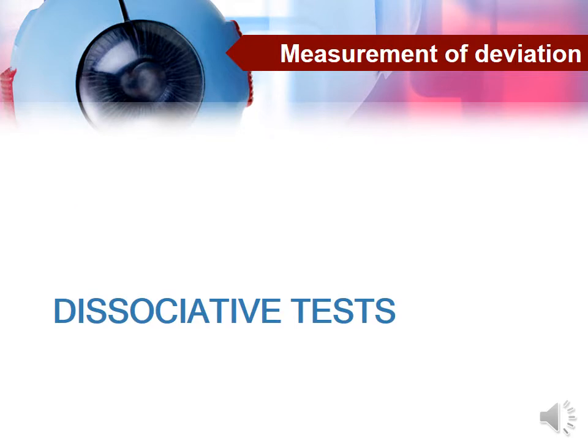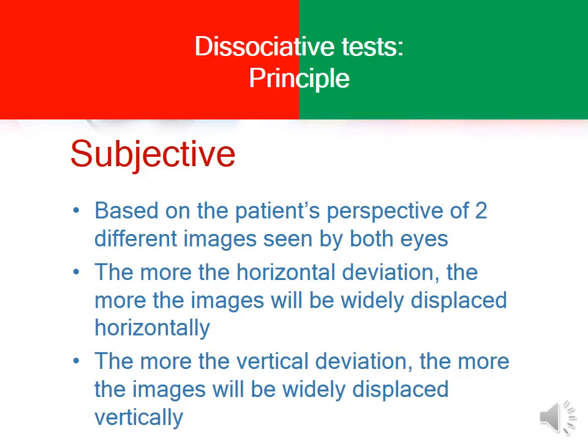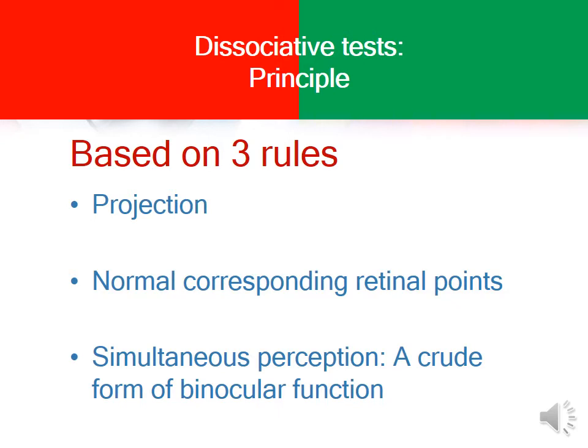All dissociative tests are subjective tests. They are based on the patient's perception of two different images seen by both eyes. The more the horizontal deviation, the more the images will be widely displaced horizontally, and the more the vertical deviation, the more the images will be widely displaced vertically. Dissociative tests are based on three physiological principles: projection, normal corresponding retinal points, and simultaneous perception.